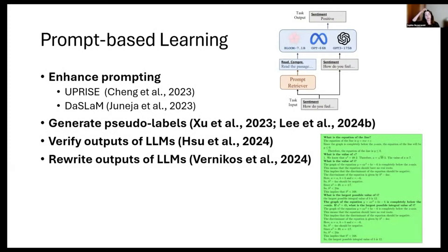Two examples are given in the paper. The first one, UPRISE, tunes a lightweight retriever that automatically retrieves prompts from a pre-constructed pool, prepending a prompt to a given input. It then uses the frozen LLM to evaluate the prompt's performance, and the evaluation from the frozen LLM is used to tune the retriever in a reverse manner.